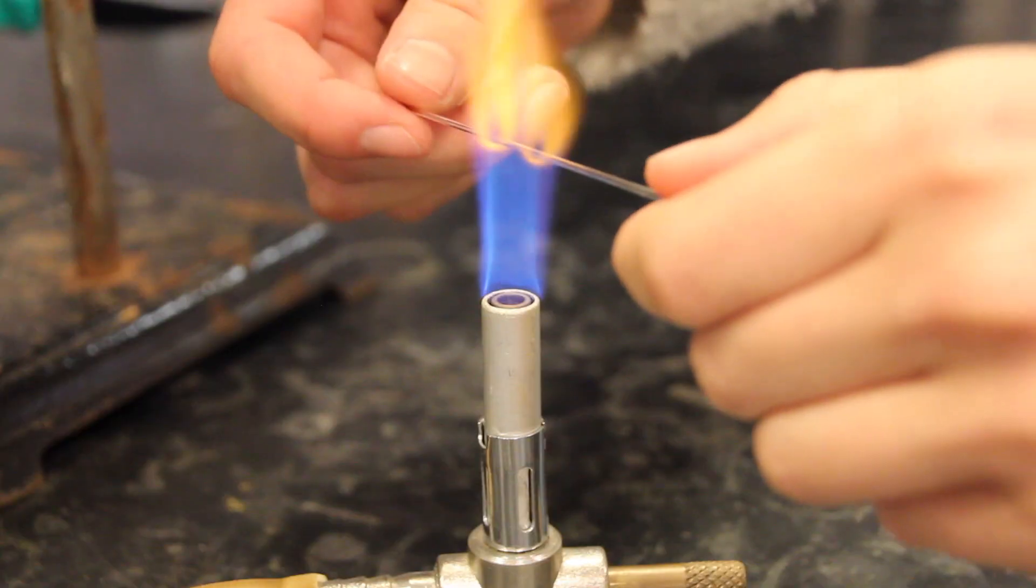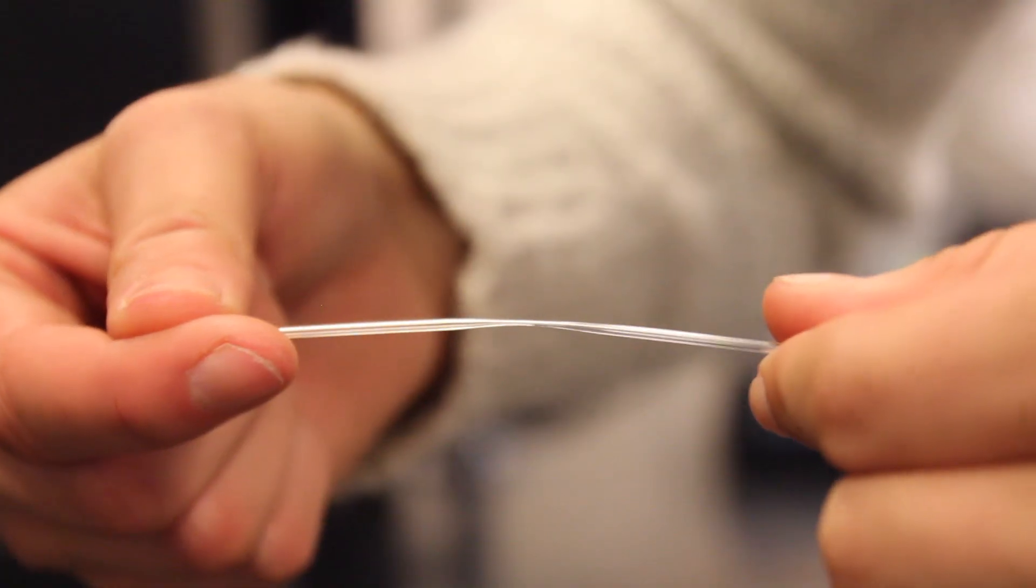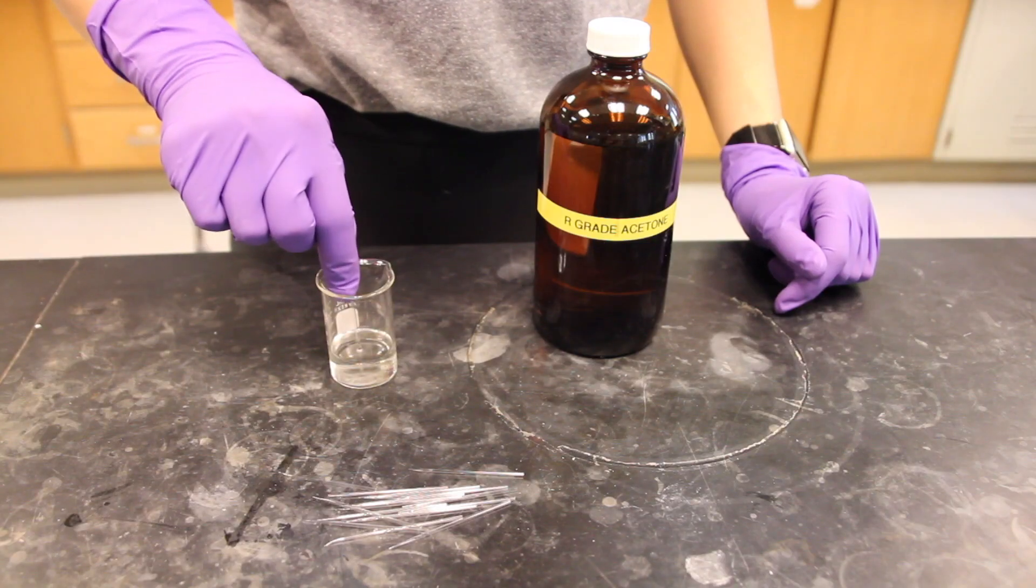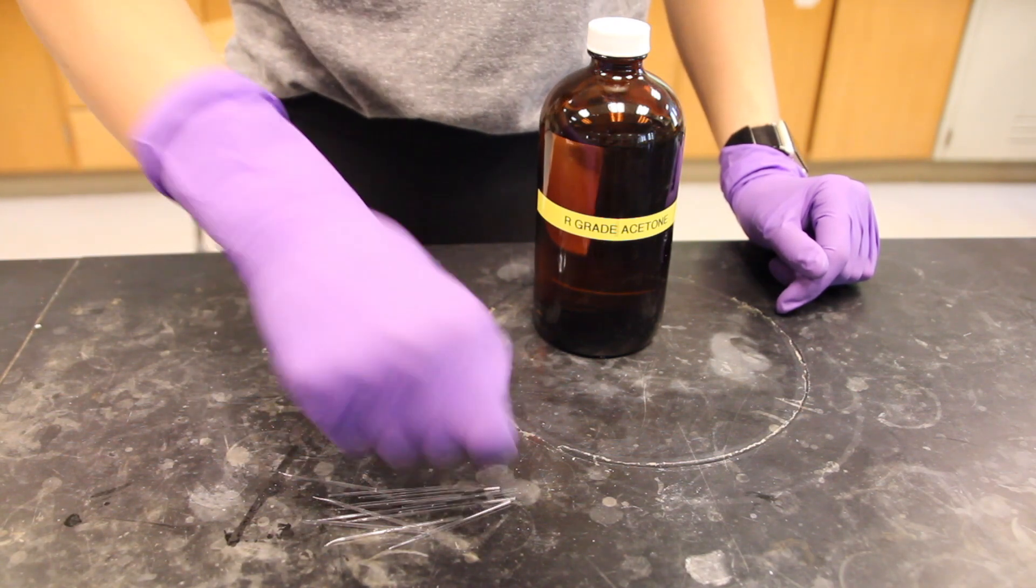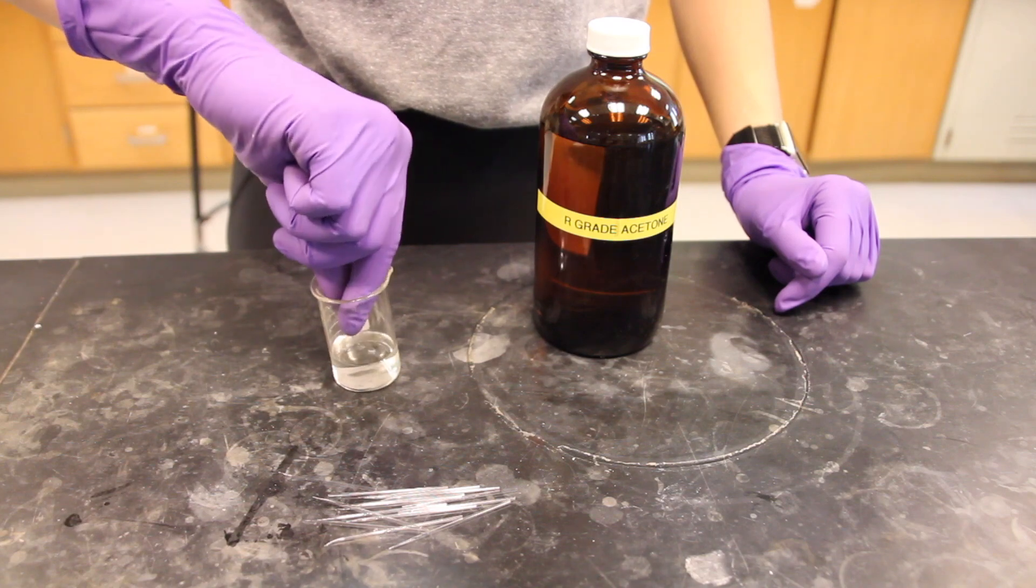Prepare at least 12 capillary micropipettes for use in spotting the plates. The procedure for creating these will be explained during your pre-lab lecture. If you would like to wash your capillaries and reuse them, refer to your lab manual for the correct procedure.